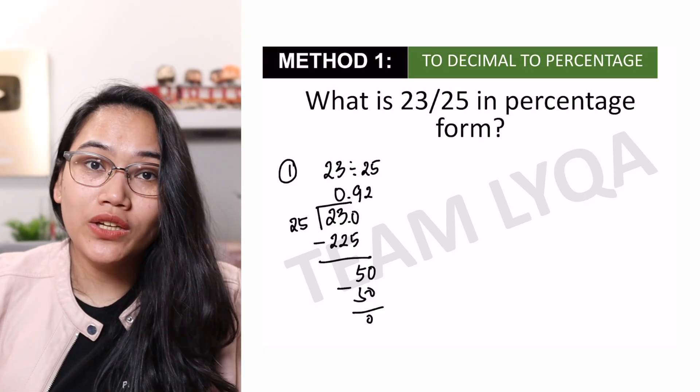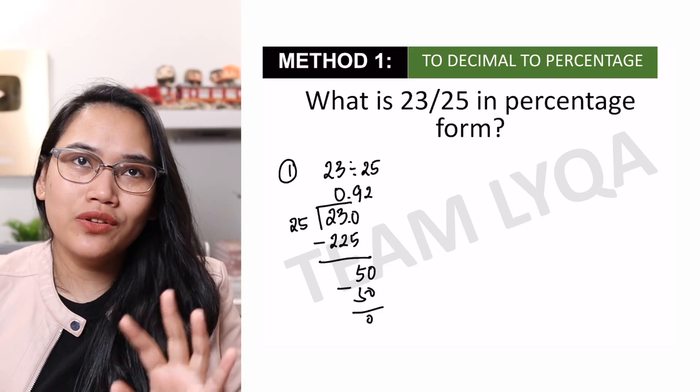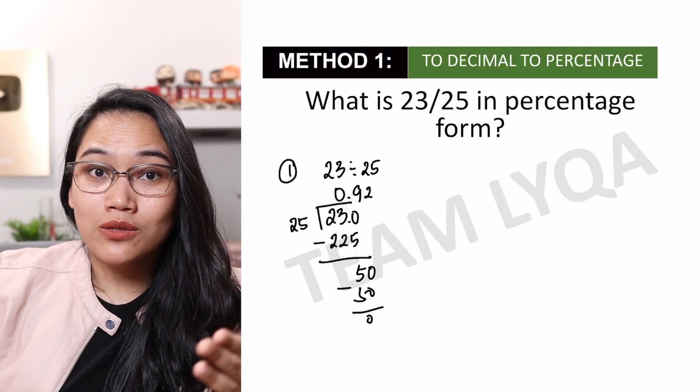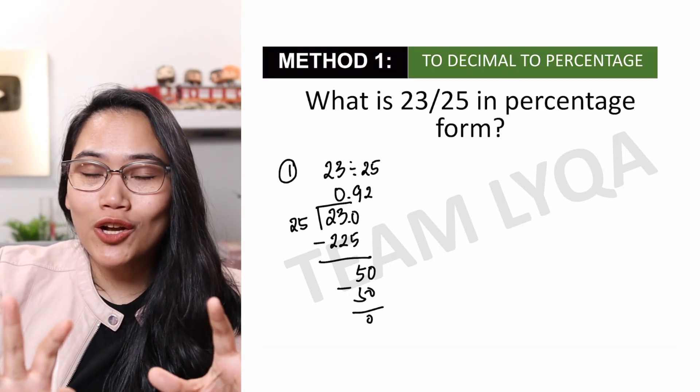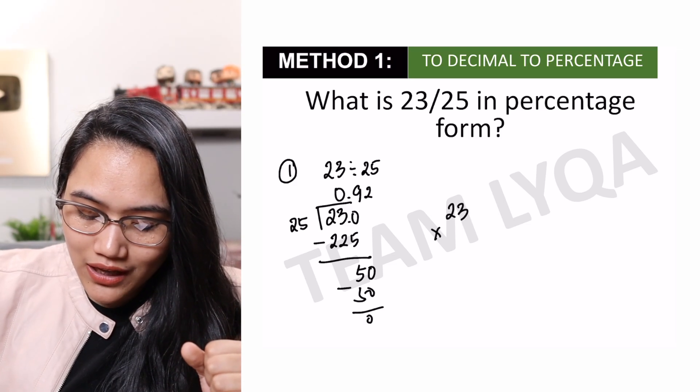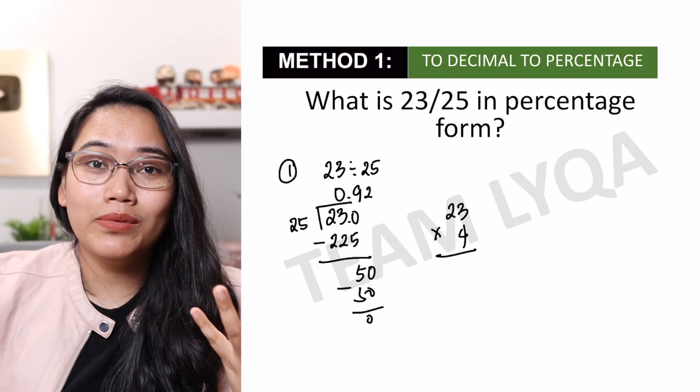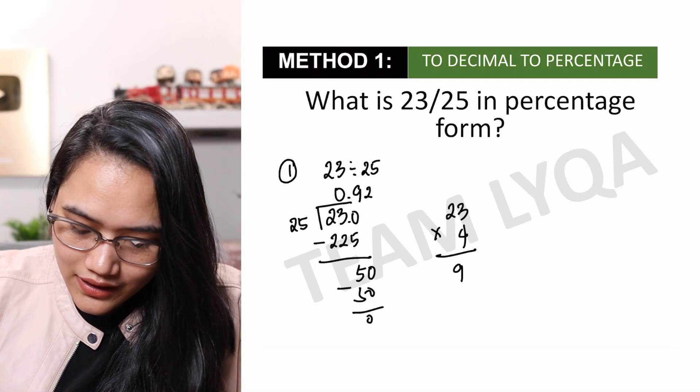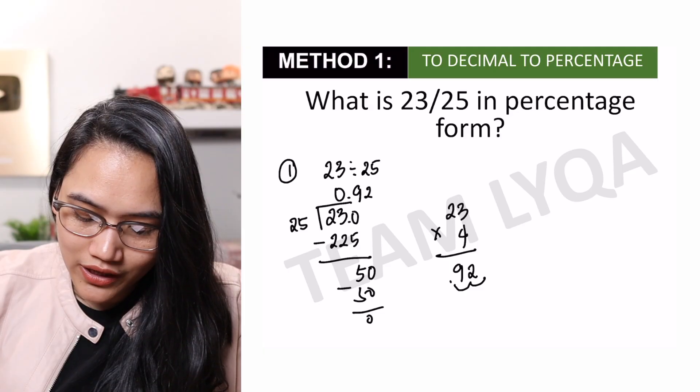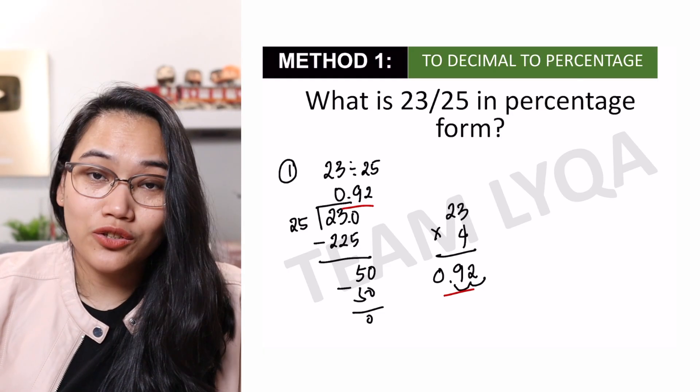Now, yung 0.92 na yan, pwede natin siya convert into percentage. But let me just show you one more trick that I do, which is when it comes to dividing numbers by 25, there's a trick there, which is instead of dividing it by 25, I will just multiply it by 4. Let me show you. Pag hindi nyo ito nakuha, okay lang din. Pero let me show you just in case kung nagmamadali talaga kayo. 23 times 4 na lang. 23 times 4 is 4 na 20, 80 plus 3 times 4, which is 12. That is 92. Familiar ba? Diba? Tapos imove ko lang yung decimal point twice to the left. So, 0.92. As you can see, pareho lang sila. 0.92 tsaka 0.92.